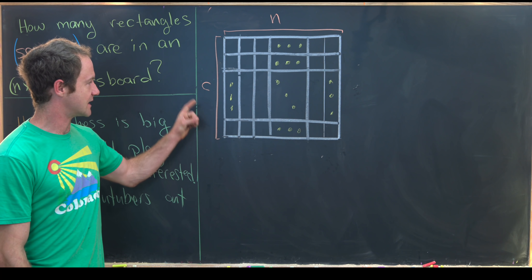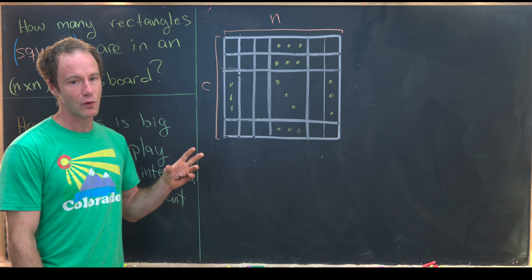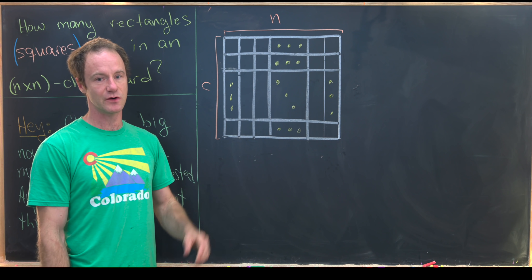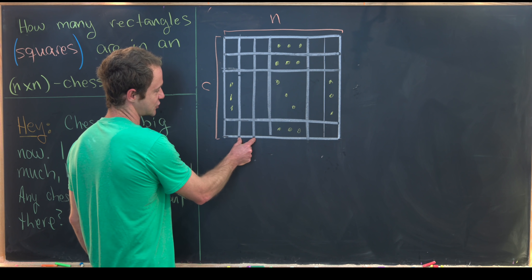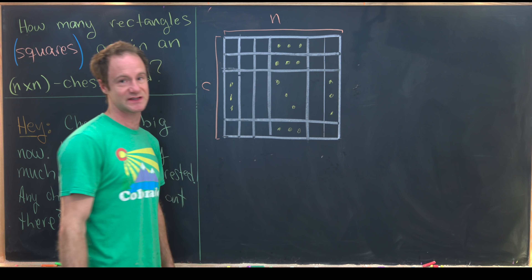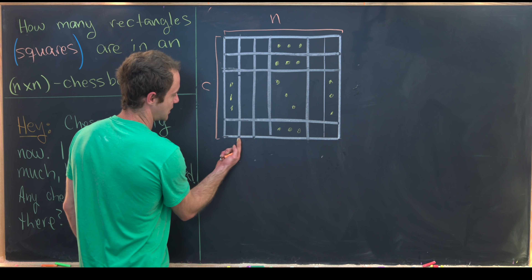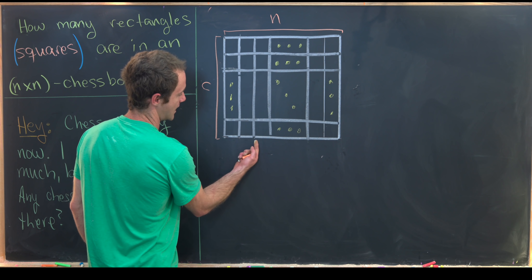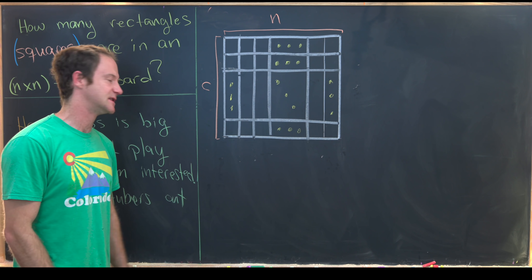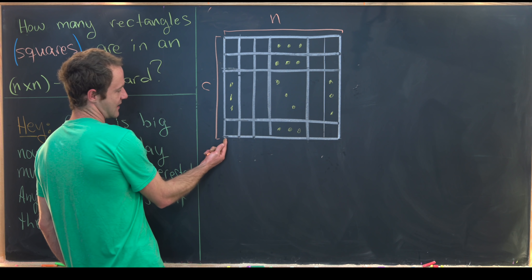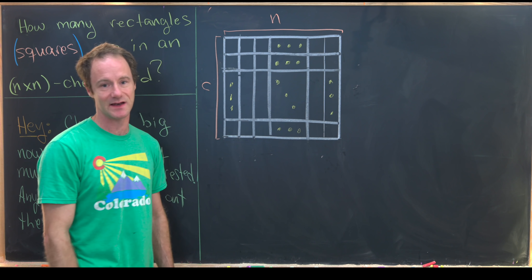Okay, so I've got an n by n chessboard, and the important thing to notice here is that if we have n squares along each side, then there are actually n plus 1 line segments. That's because depending on how you count it, we've got either an extra line segment at the beginning or the end.